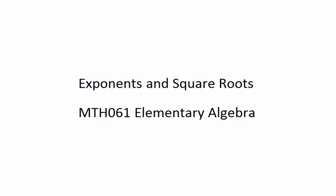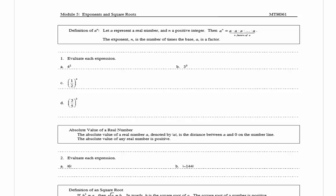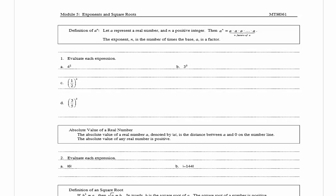In this video we're going to be looking at exponents and square roots. The definition of a to the n: let a represent a real number and n a positive integer. Then a raised to the n is equal to a times a times a, n times. The exponent n is the number of times the base a is a factor.